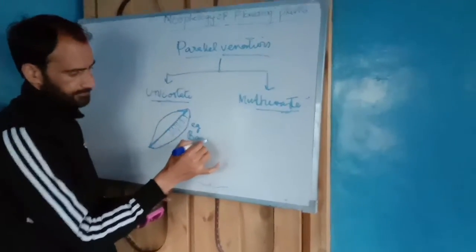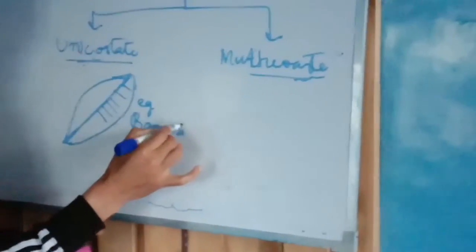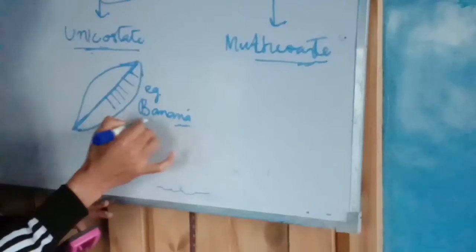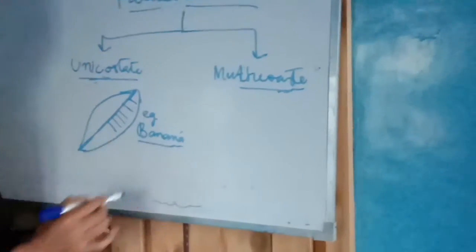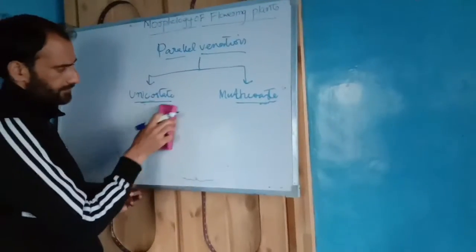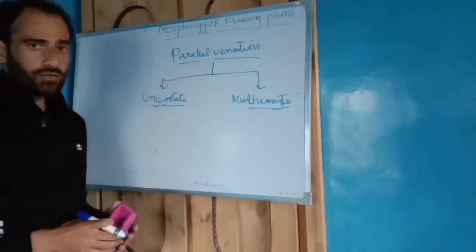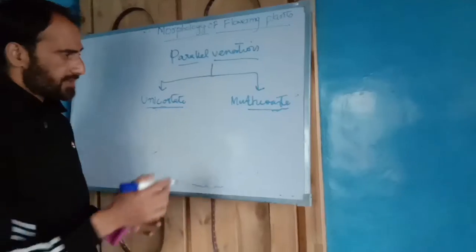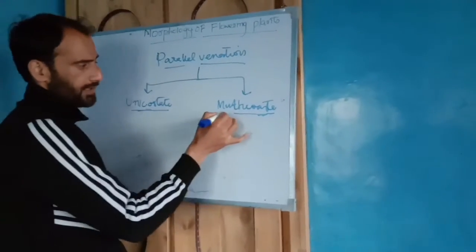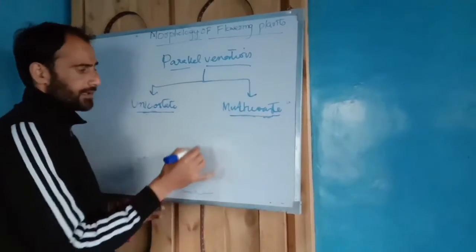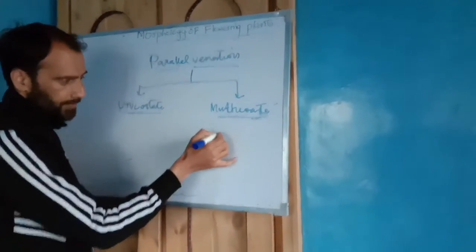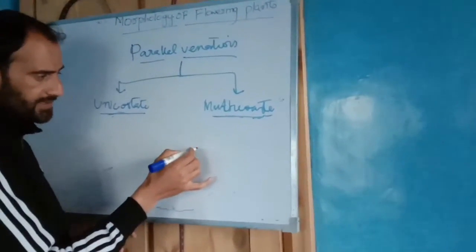This is an example of multi-costate venation. So what happens in multi-costate? In this case, there are many veins.